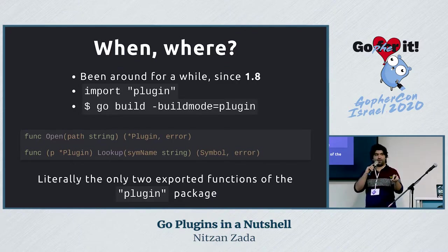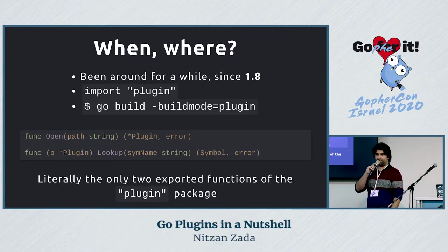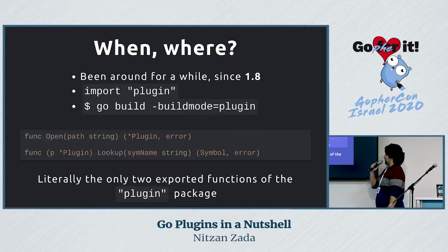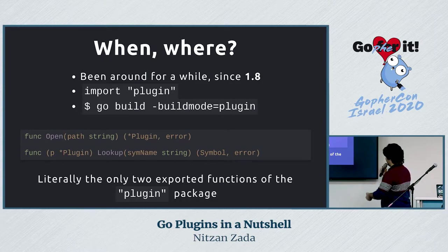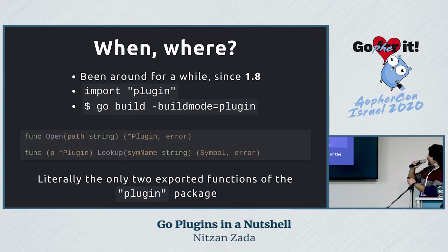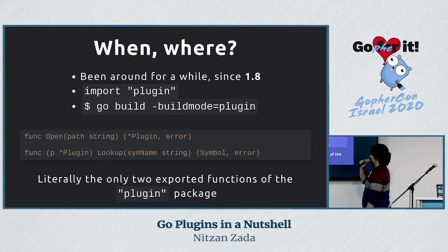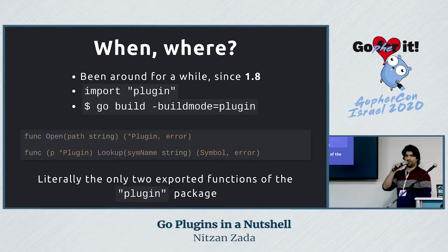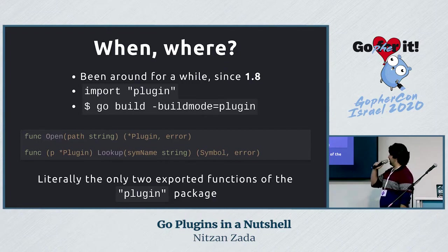Is anybody familiar with .so files? Probably the more C++ savvy people in the crowd. Essentially, building Go code with go build -buildmode=plugin will compile your module into a shared object.